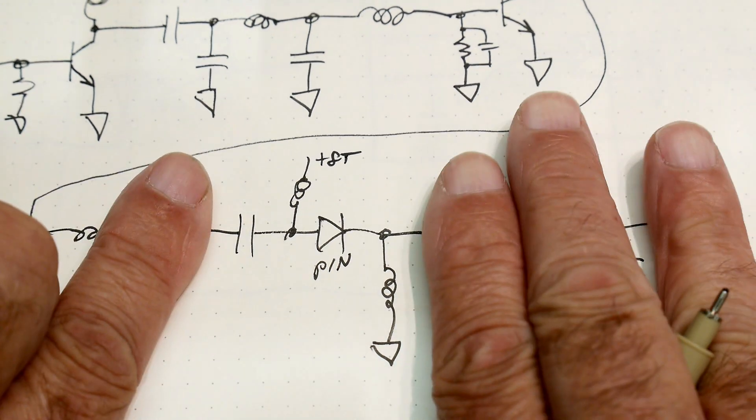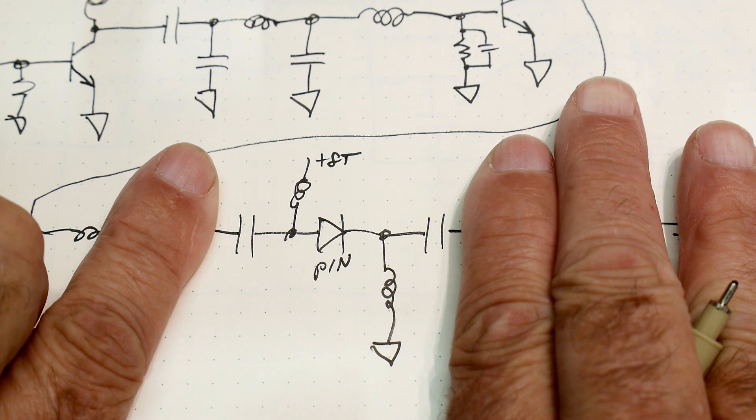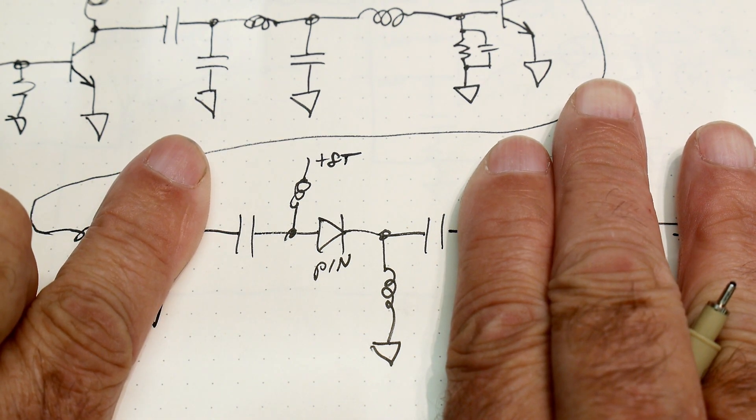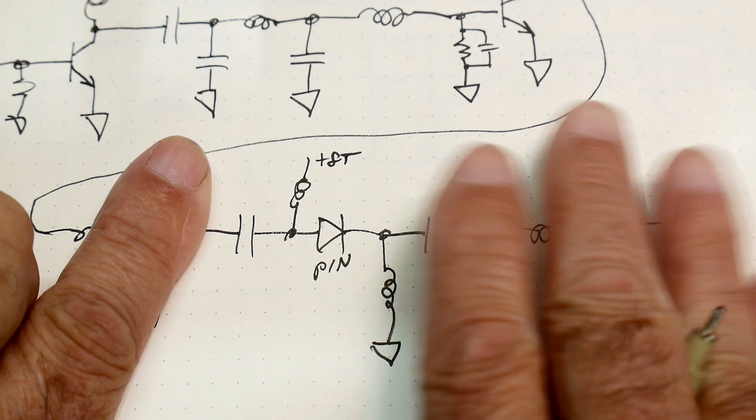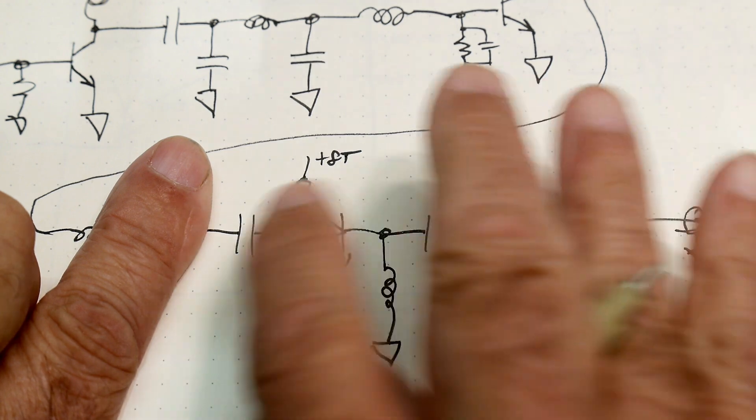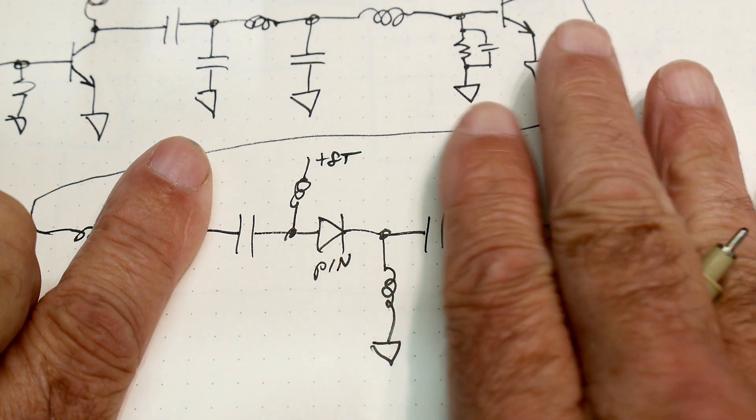And then this little section right here is a switch. It's capacitively coupled input and output. And that's because there's some DC biasing on this pin diode.